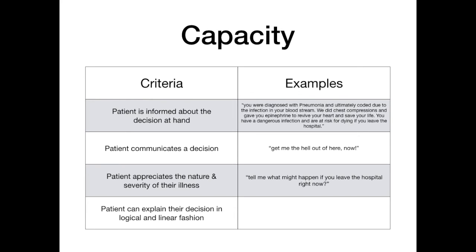The fourth and final criteria of capacity is that the patient can explain their decision making in a relatively logical and linear fashion. For example, you as the physician ask, 'Why do you want to leave the hospital? Tell me how you came to that decision.' If they say, 'My father was admitted to the MICU once, had a breathing tube put in, they poked him with needles every day, he had lines coming out of every extremity — I just don't want to live like that,' that is an example of having capacity. It can be a shitty decision — you don't have to agree with it. But if their decision making is logical and linear and they can explain how they processed all the information through the first three criteria and arrived at this decision, then they have capacity and you must respect it.